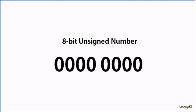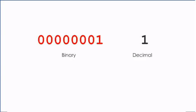In an 8-bit unsigned number, all 8 bits are used to represent the number. The number 1 is represented by 00000001, and 2 is represented by 00000010. The counting continues from there.